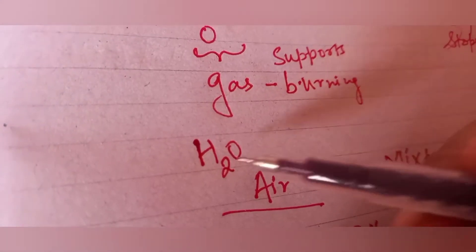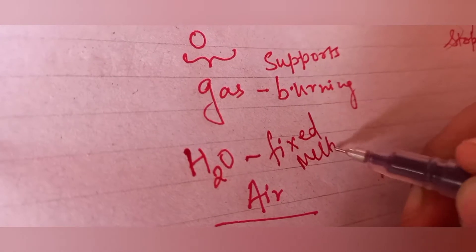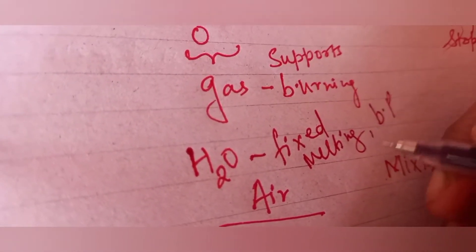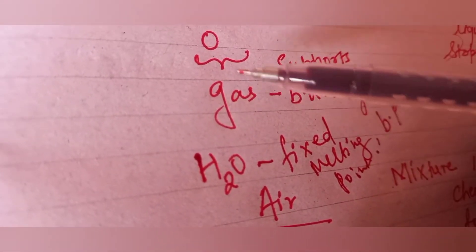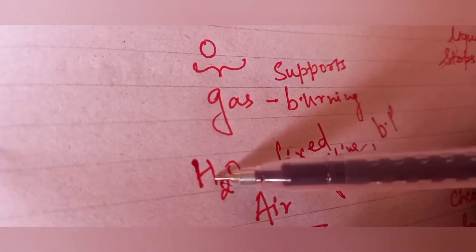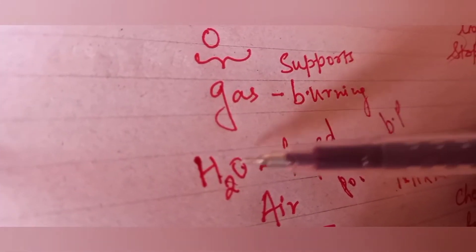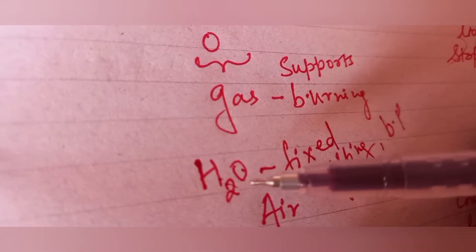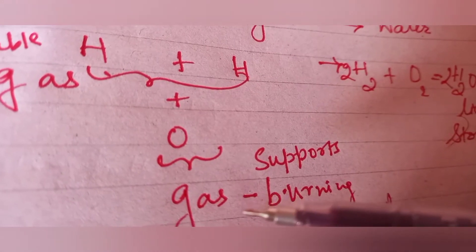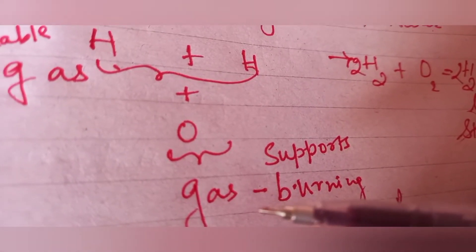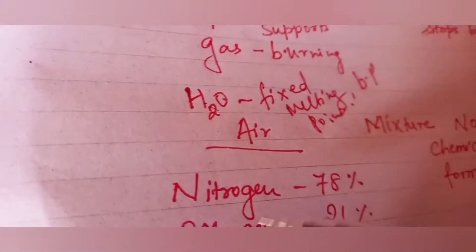Water will have a fixed melting and boiling point. You cannot separate hydrogen and oxygen from water by simple physical methods — it has to be separated by a chemical process. And during the formation of water, there may be energy released or energy absorbed.